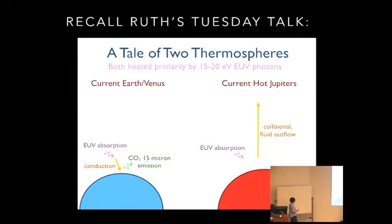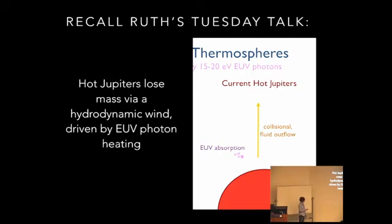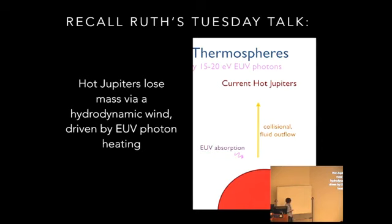If you recall, she talked about there being multiple ways you can get escape from both solar system and exoplanets. And the type of escape I want to focus on today is the kind that's relevant for hot Jupiters, where you have a hydrodynamic outflow that is driven by the EUV photons from the star. The idea is that you launch a hydrodynamic wind because you have EUV photons that are absorbed in the atmosphere, they ionize hydrogen, those electrons bounce around, they collide, they heat up the gas, the gas gets hot, and you get a pressure-driven outflow that can be modeled as a fluid wind.